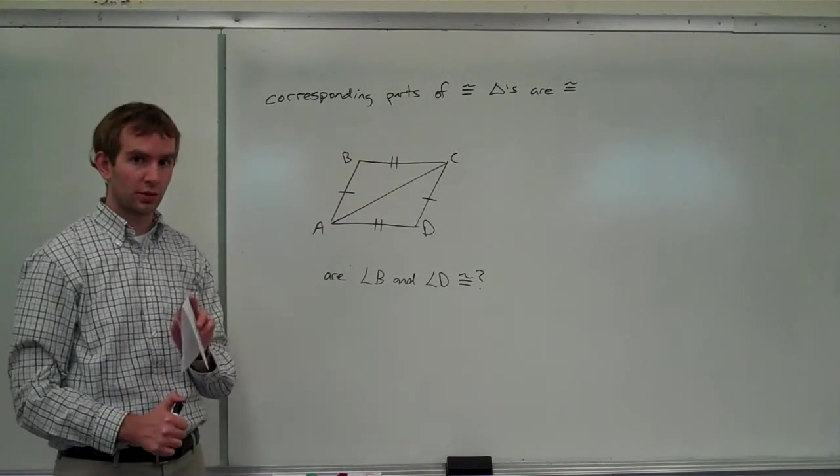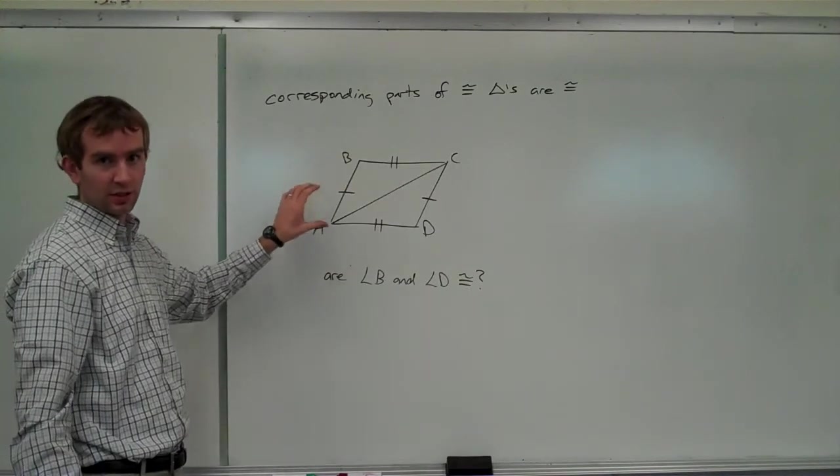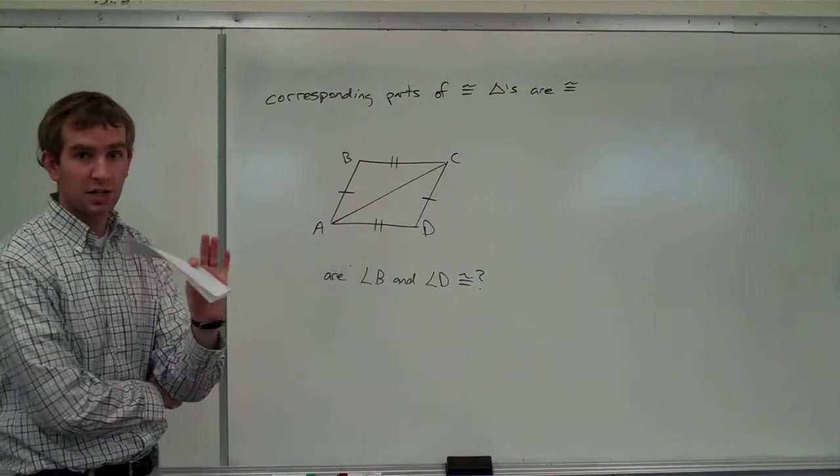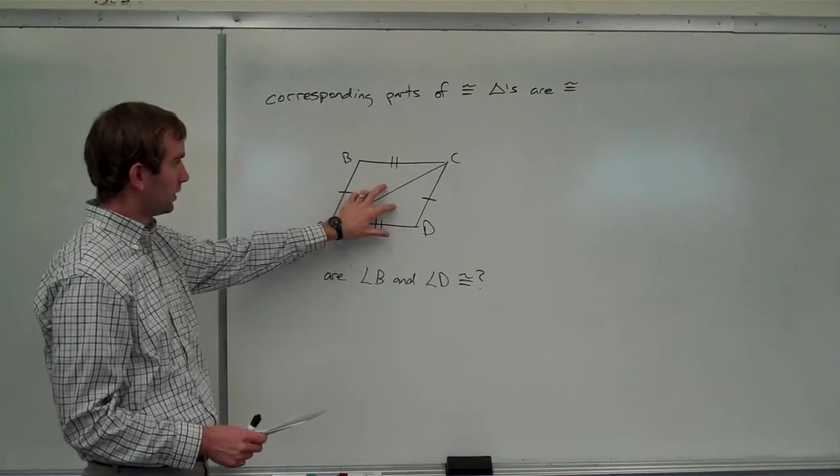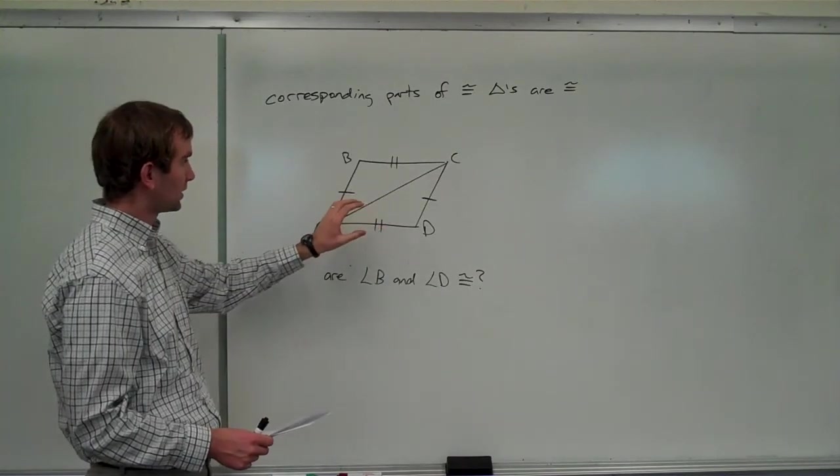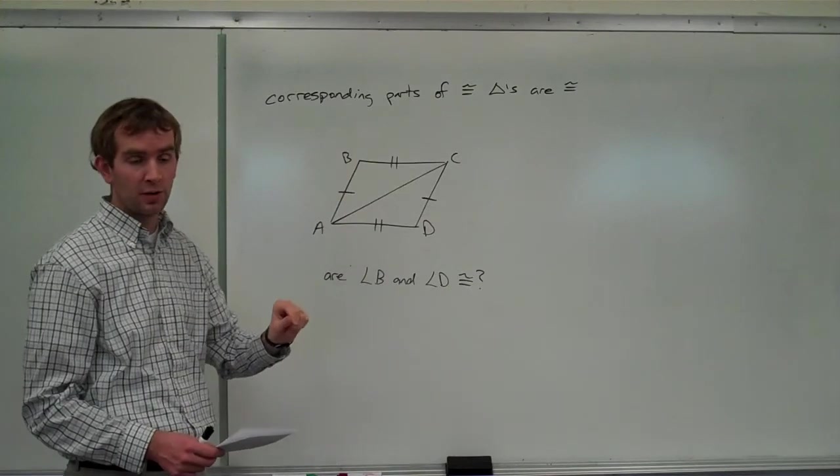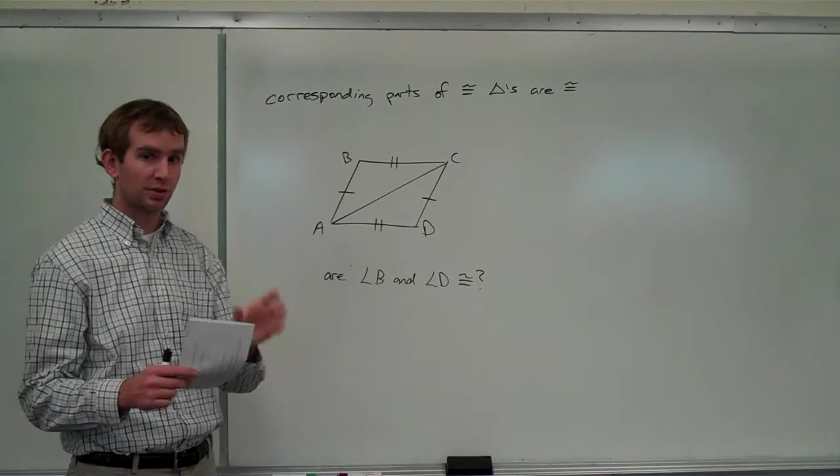If I know that two triangles are congruent, whether I show it via side, side, side, side, angle, side, or one of my other couple of theorems and postulates, if I know that they're congruent, I know that not just the side, side, and side are congruent, as we'll find out in this case, but everything else about them, all corresponding parts, have to be congruent.